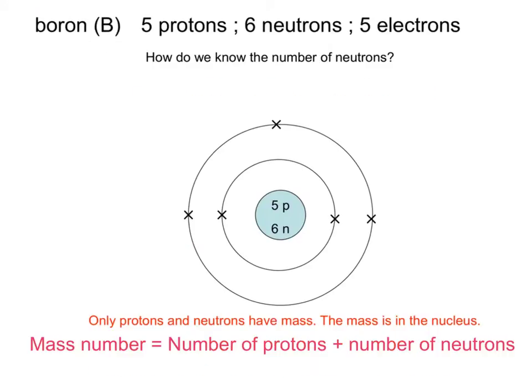But how about the number of neutrons? Well, there's a second number associated with each element, and this number is called the mass number. The mass number is the number of protons and neutrons, because these are the only ones which really have any mass. There's no point counting the number of electrons in the mass, because the electrons weigh next to nothing. So when we work out the mass of an atom, we add up only those particles which are the heavy ones in the nucleus, the protons and the neutrons.